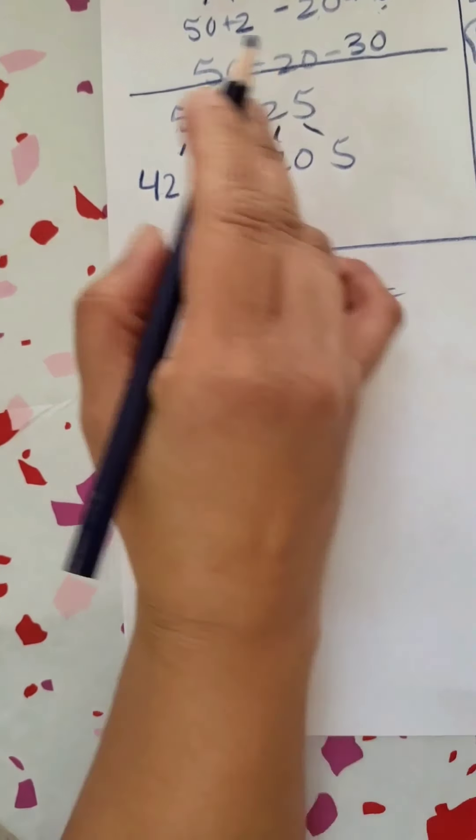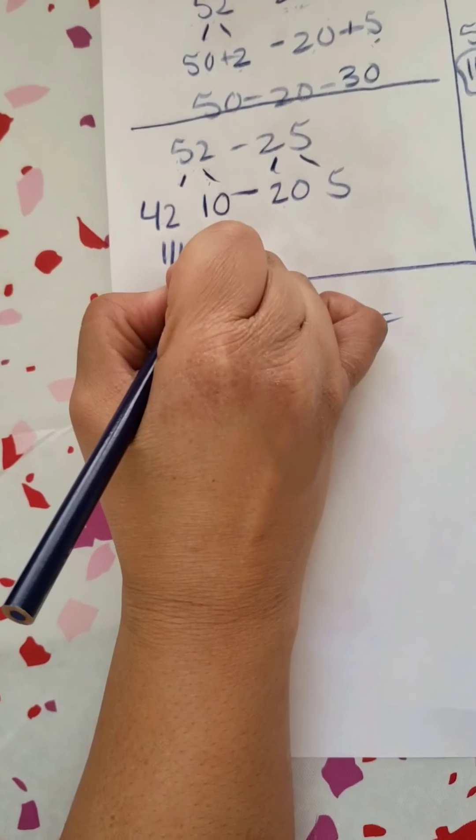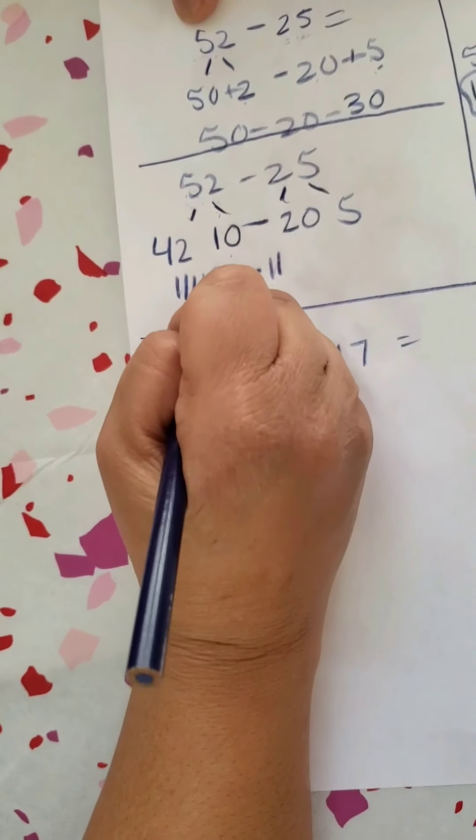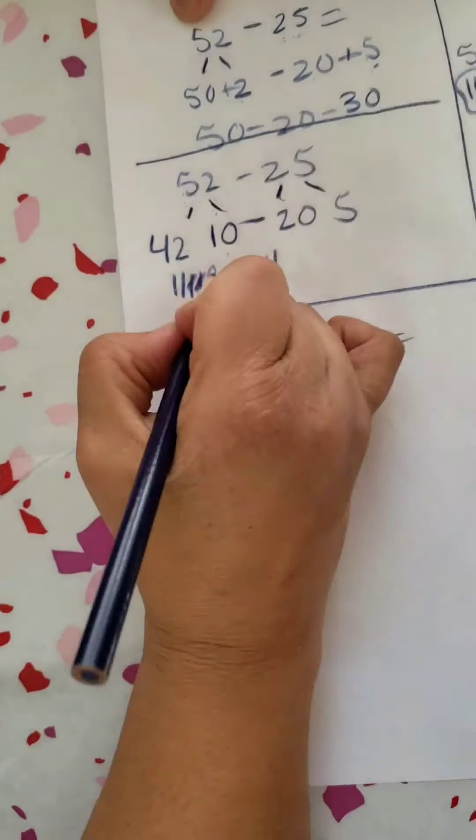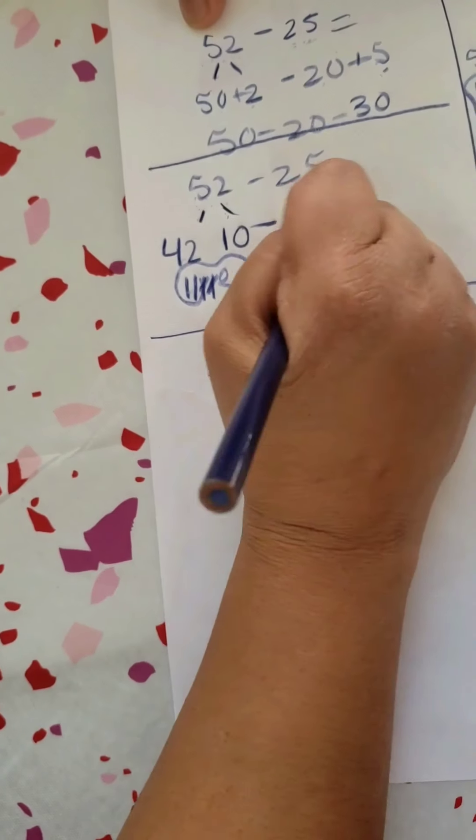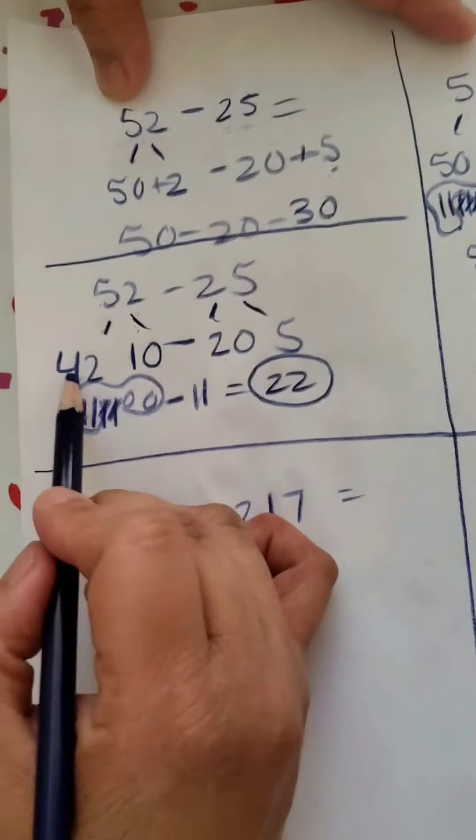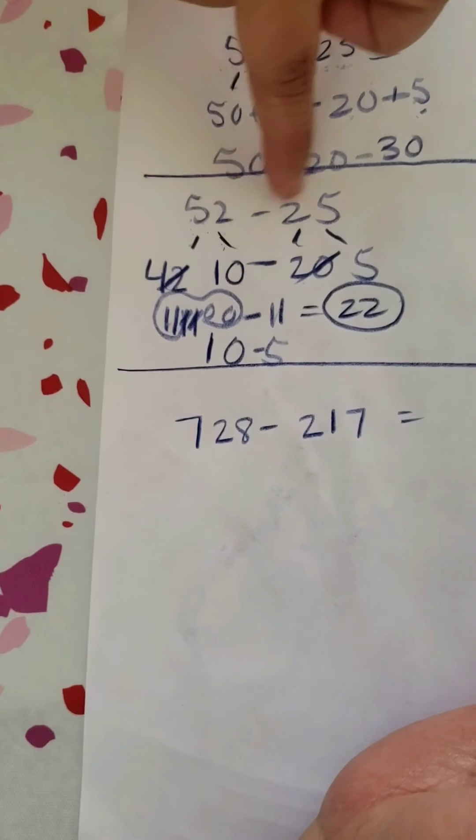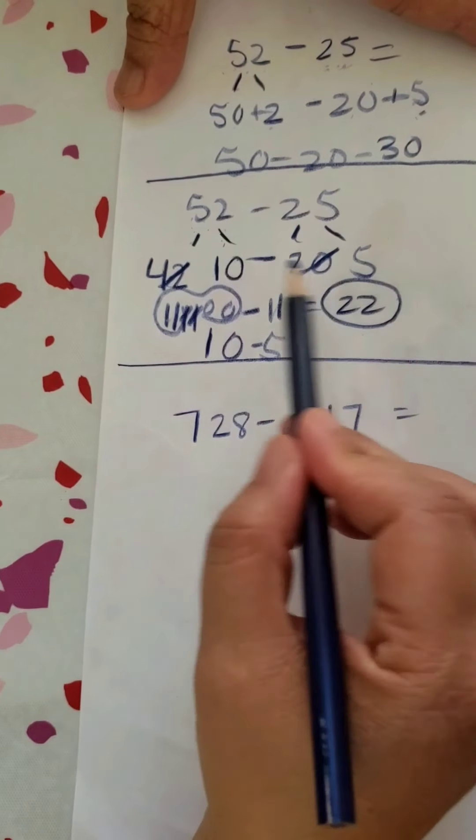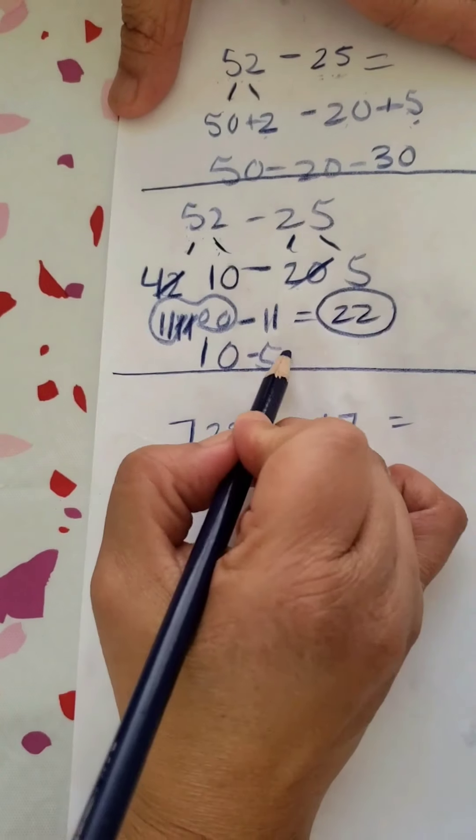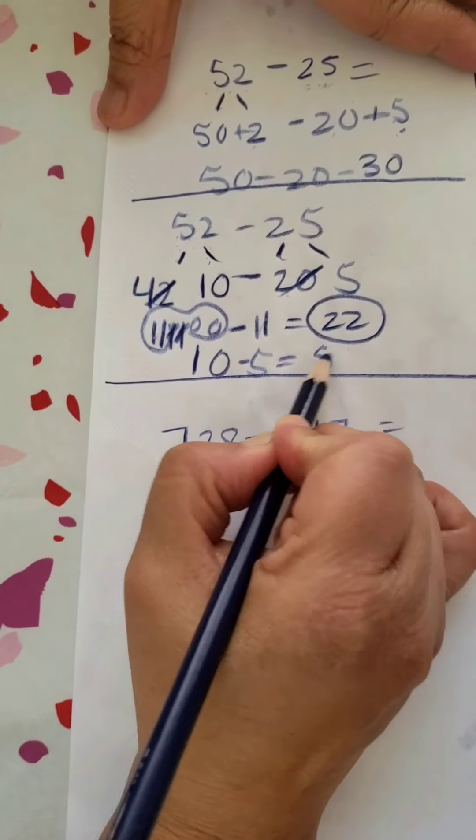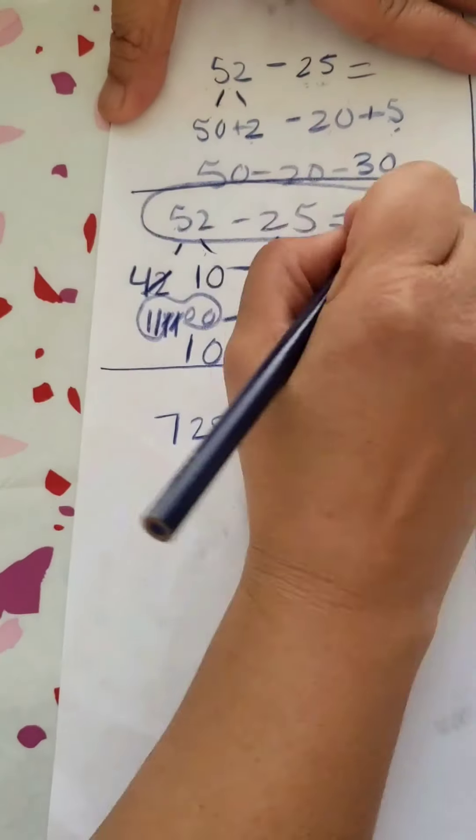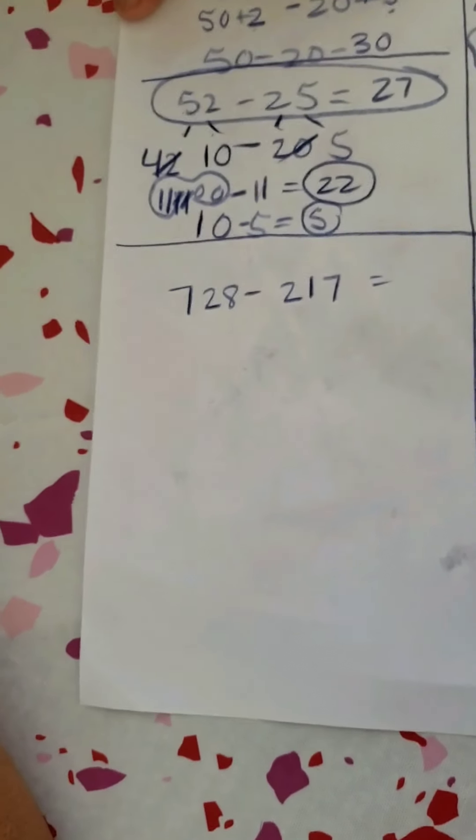Now I have 42 minus 20. I have 10, 20, 30, 40, 41, 2, right? Minus 20. So I'm minusing my two tens, 10 and 20. So I know that it is 22 that I'm working with, and that's my new number. Then I have 10 minus 5. Now I'm not coming into the problem of not being able to subtract my 2 and my 5 because I was able to get a friendly number when I decompose it and took my 10. 10 minus 5 equals 5. So I'm going to add these two together. 22 and 5 is 27. So I know that that's my answer.